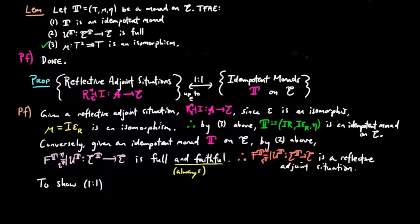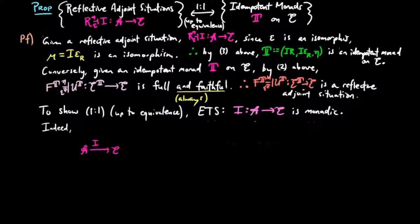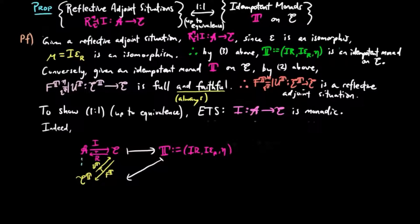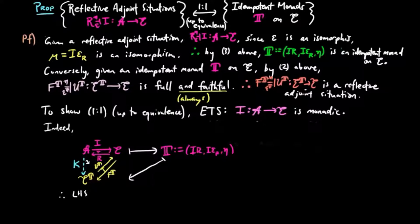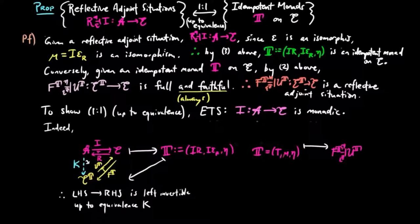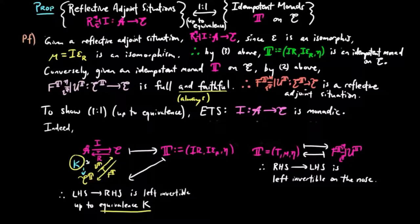To show these assignments are essentially invertible, in other words up to equivalence of categories, it is enough to show that I is monadic. Indeed, if we have a reflective adjoint situation R, i, it is taken to the induced idempotent monad T, which is then taken to the Eilenberg-Moore free-forgetful reflective adjoint situation. So if I is monadic, the comparison functor K gives us an equivalence of reflective adjoint situations over E. Therefore the induced monad assignment from reflective adjoint situations over E to idempotent monads over E is left invertible up to the equivalence K. And it is easy to see that the assignment of an idempotent monad on E to its Eilenberg-Moore construction over E is left invertible by the induced monad construction on the nose. So we only need to show that the comparison functor K is an equivalence, which is by definition showing that I is monadic.